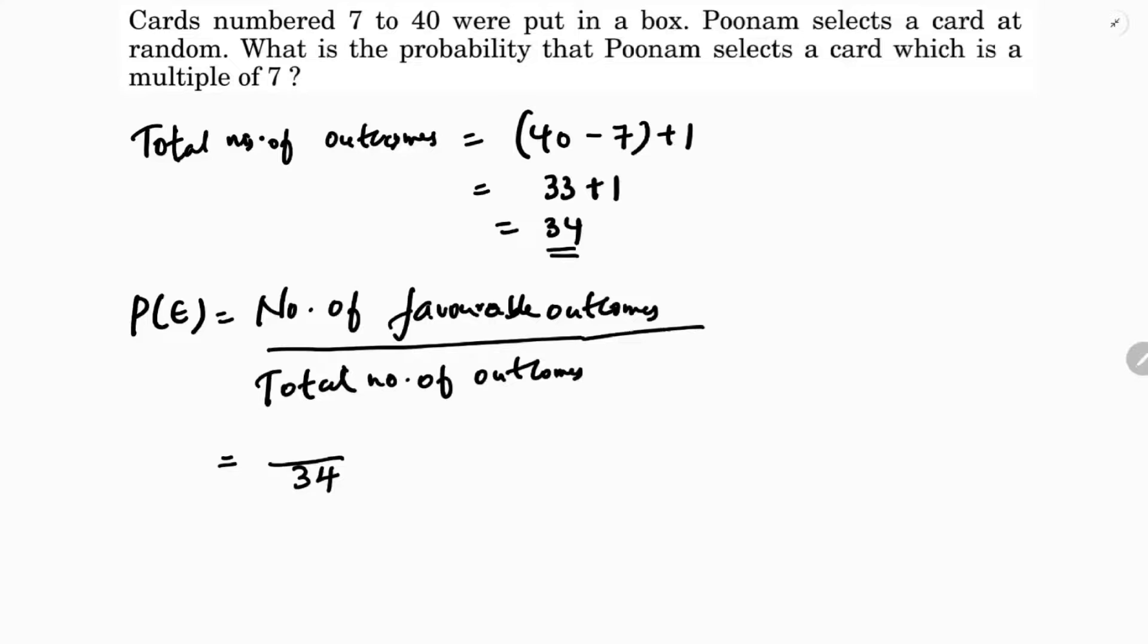Now we need to select the multiples of 7. Multiples of 7: 7, 14, 21, 28, 35. The next number is 42, which is 7 times 6, but we cannot take it as it exceeds 40. So total number of favorable outcomes are 5. The answer is 5 by 34.